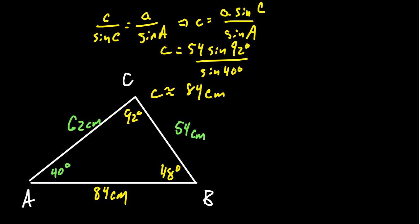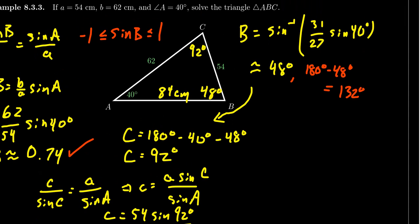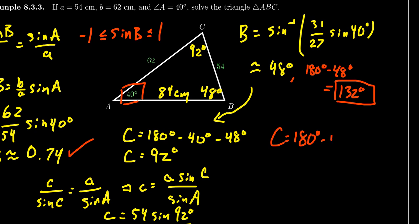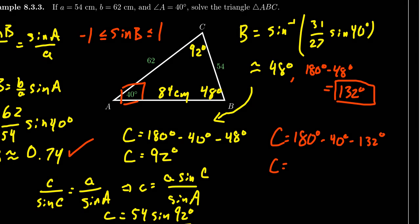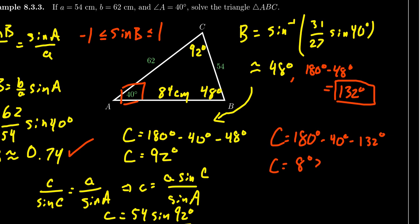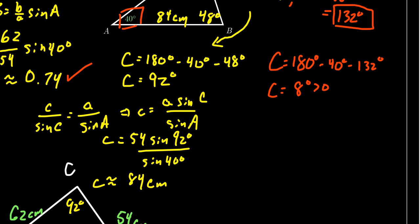But what if B is an obtuse angle? We must consider that case. If B is 132° and A is still 40°, then C equals 180° − 40° − 132°, which gives C = 8 degrees. This is a positive angle measure — that's the critical check. If C had turned out negative, the obtuse case would be impossible. But since C = 8° is positive, there is a legitimate second solution — an example of the ambiguous case with two distinct solutions.